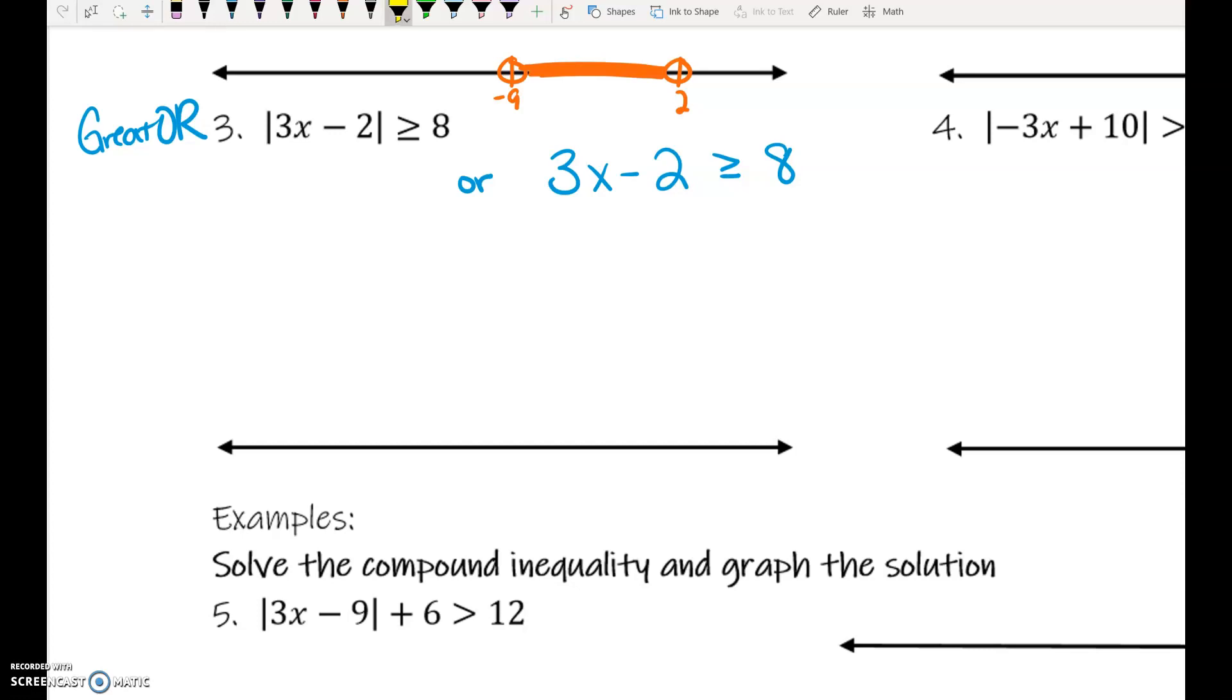The other inequality, we are going to change both the sign and the right side. So, we're going to flip both of those. 3x minus 2 is less than or equal to negative 8. Flip the sign and take the opposite of the right side. Now, we need to solve both of those inequalities.